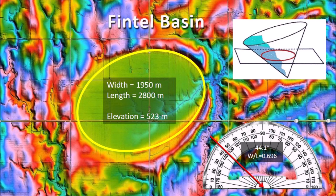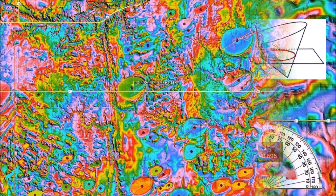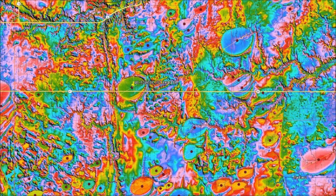The study of the Carolina Bays is not complete unless it also includes the Nebraska Rainwater Basins. Northerly storms from Canada have eroded many of the Nebraska Rainwater Basins, but we will continue to examine them one bay at a time. Please subscribe to be notified of future videos about the Carolina Bays.